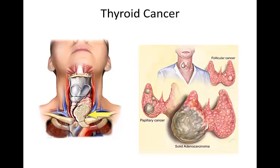Cancer of the thyroid is much less prevalent than other forms of cancer; however, it accounts for 90% of endocrine malignancies. According to the American Cancer Society, there are an estimated 25,000 new cases of thyroid cancer diagnosed each year. There are several types of cancer of the thyroid gland, and the type determines the course and prognosis. External radiation of the head, neck, or chest in infancy and childhood increases the risk for thyroid carcinoma.